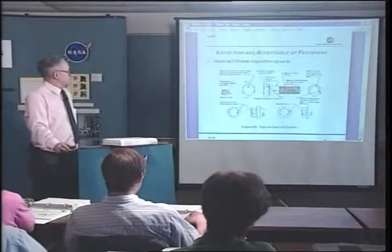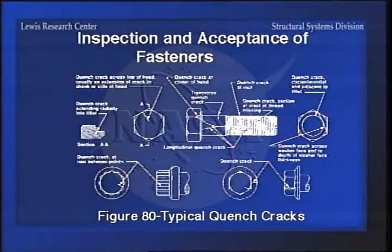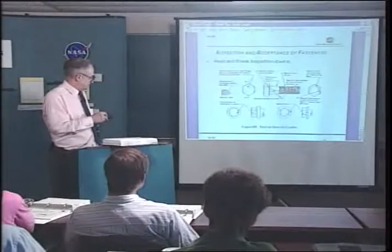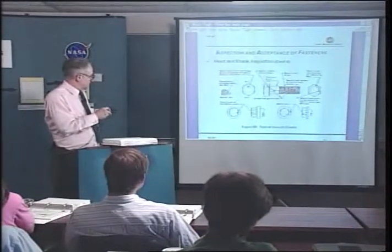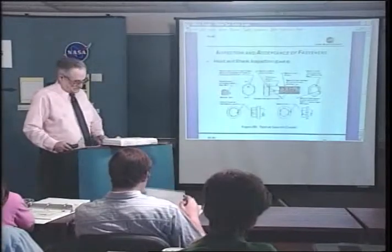Here are some examples of the things in head and shank inspection. These are quench cracks, which can happen in the heads, in the shank, around the top of the head. But here's the one that really gets you - if you have any cracks in the fillet radius under the head, you're in real trouble. That's from FFS 86 or ASTM F788.